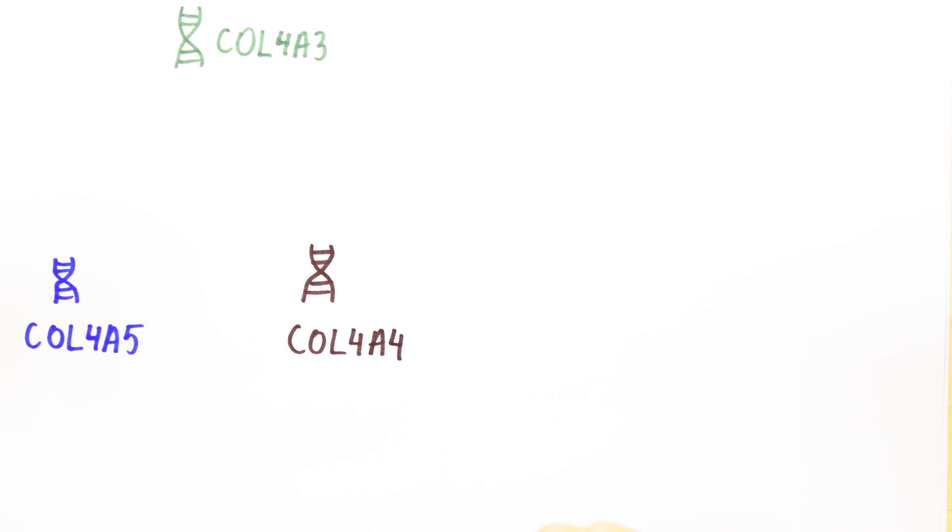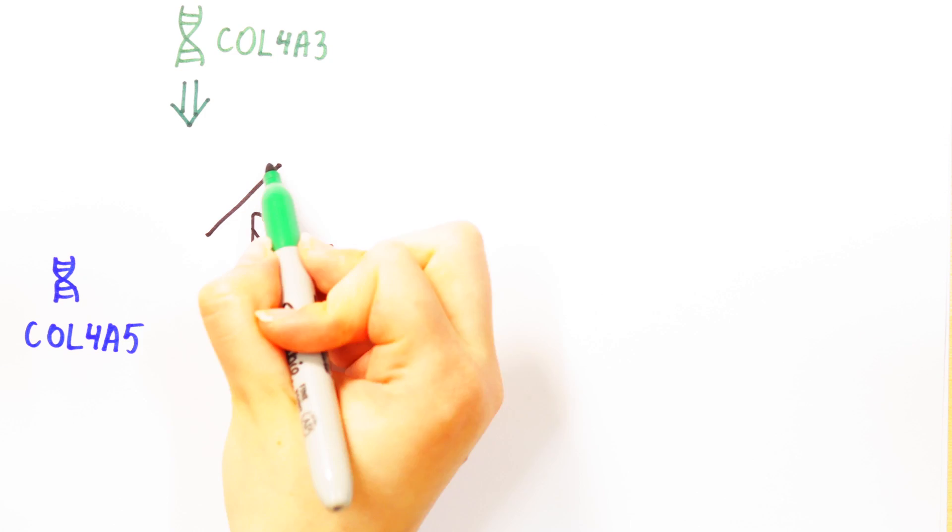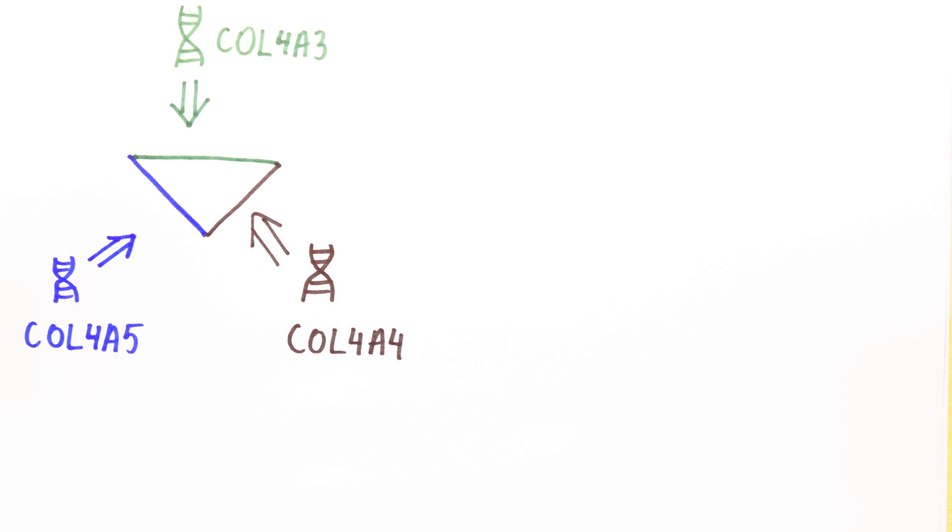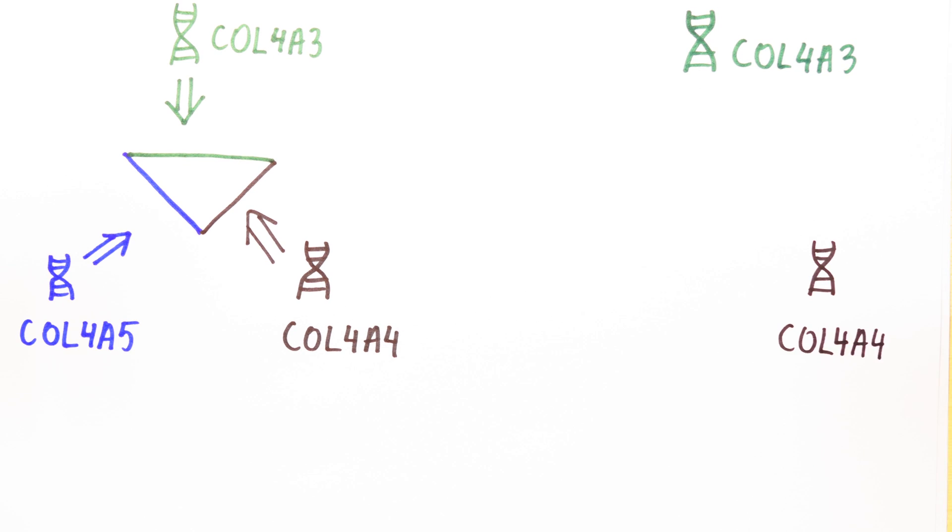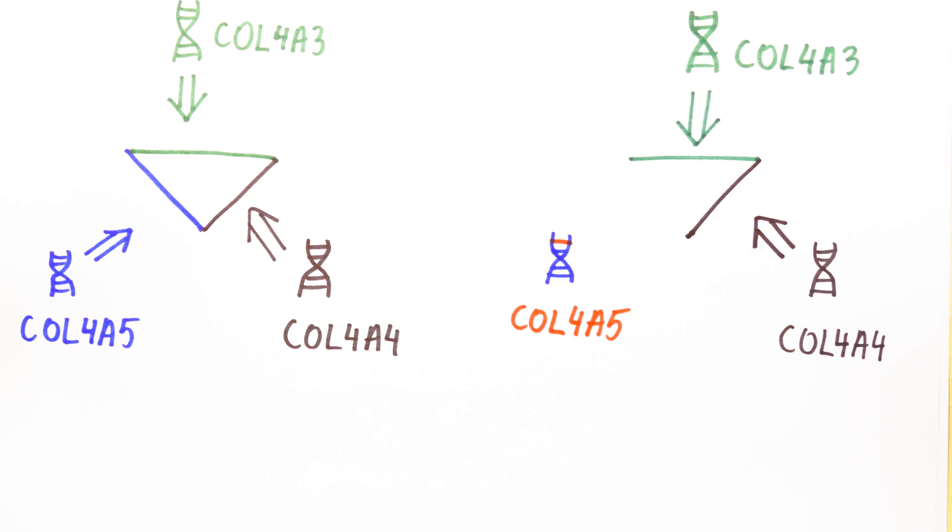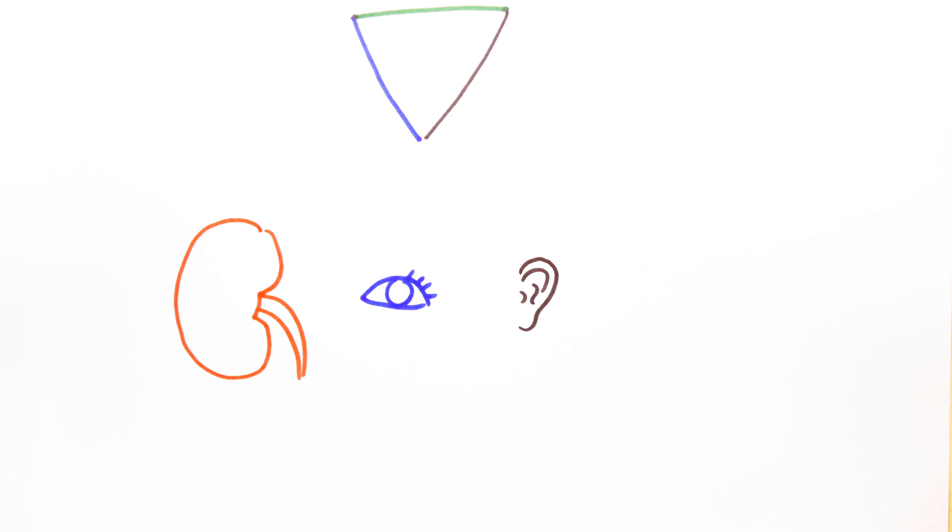These three genes are necessary to make chains of a protein called collagen IV. The three chains wrap together to form a structure called a trimer, and so if one of the chains is not made because of a faulty gene, the trimer fails to form. Interestingly, this trimer is found only in the kidney filters, the inner ear and the eye, the exact same places affected by Alport syndrome.